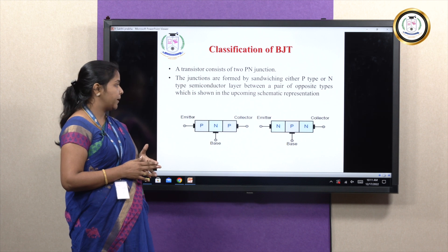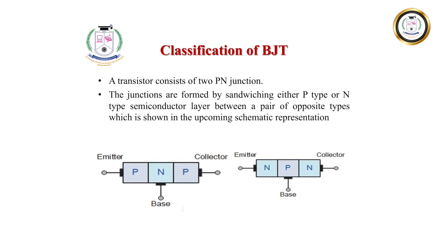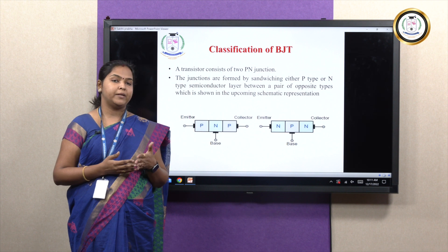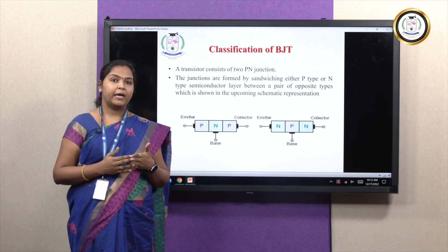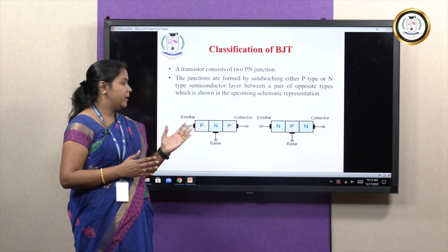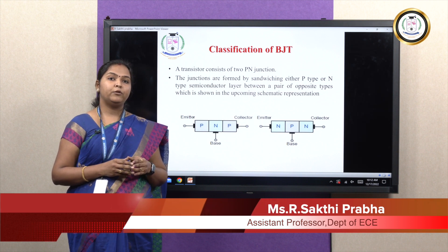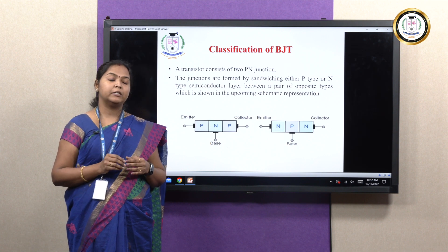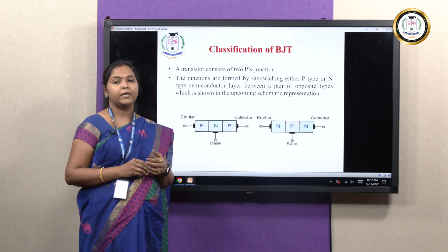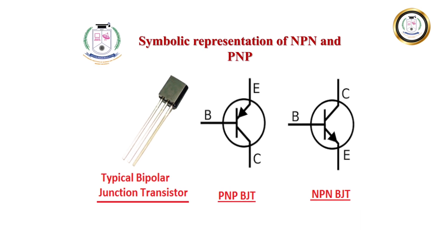When you look into the construction of this bipolar junction transistor — for example, if you want to construct a PNP transistor, you take an N-type semiconductor and sandwich the P-type material on both sides. Thereby you can construct a PNP transistor. The same process is involved for the NPN transistor. When you look into the junctions of this bipolar junction transistor, we can find two junctions, named after the terminals located: the emitter-base junction and the collector-base junction.